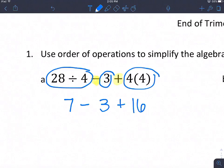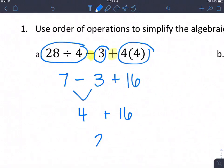And now when I'm left with addition and subtraction, I need to take that from left to right. So I'm starting here, 7 minus 3 is 4. And then I have 4 plus 16, which is 20. So my final answer is 20.